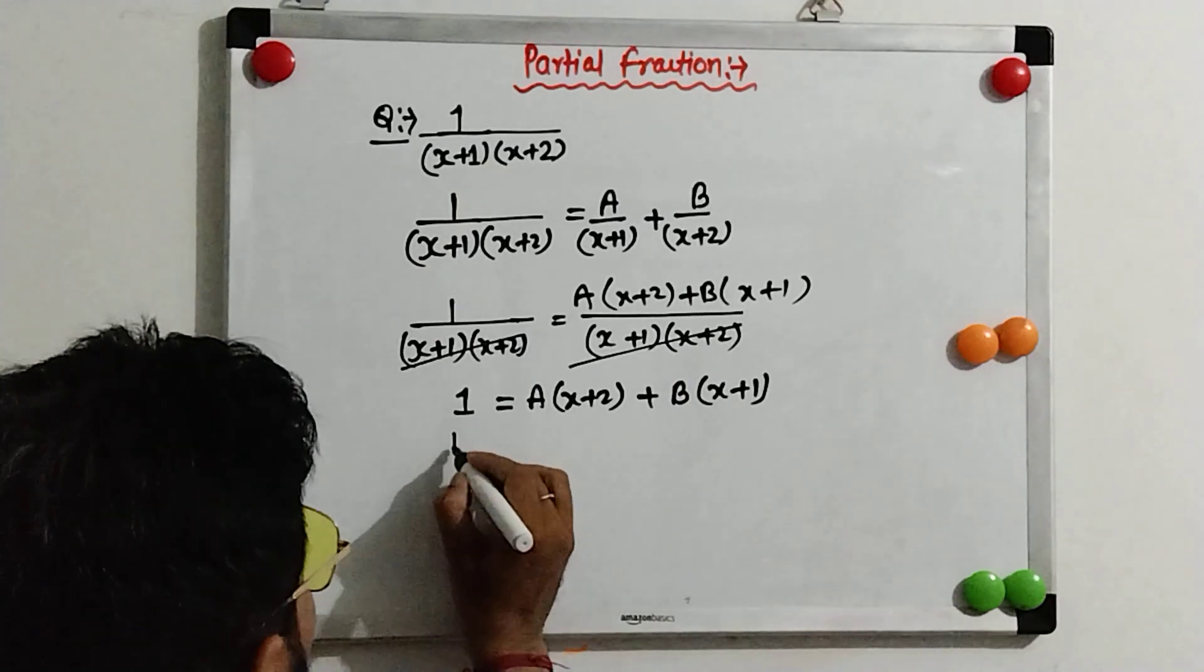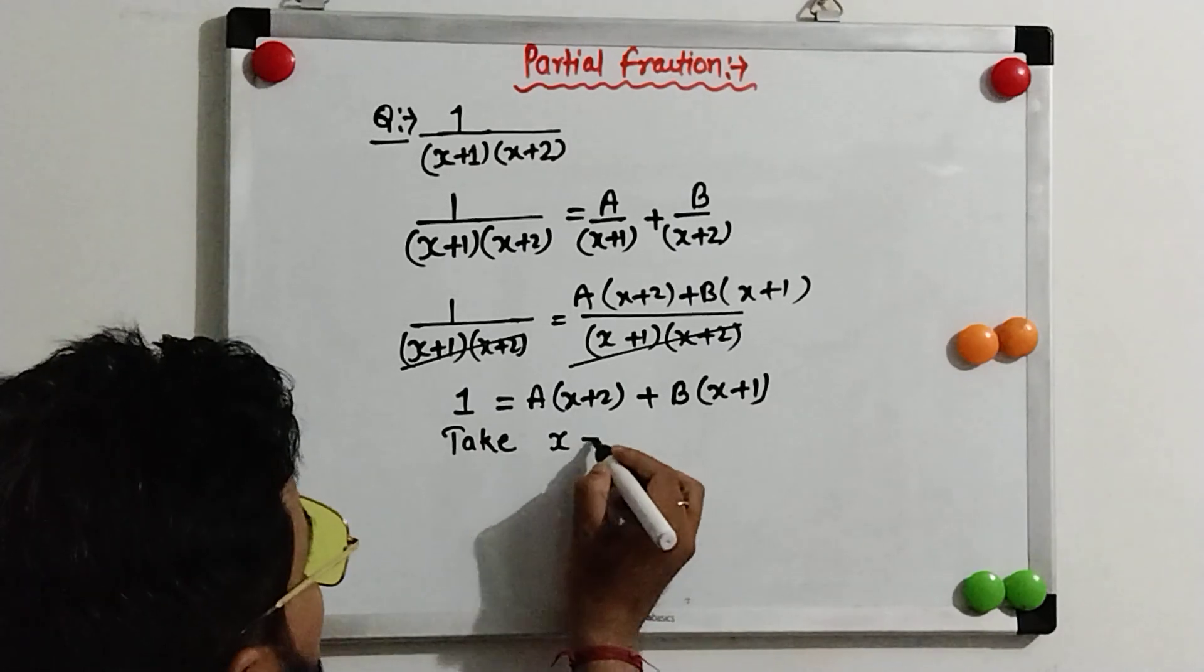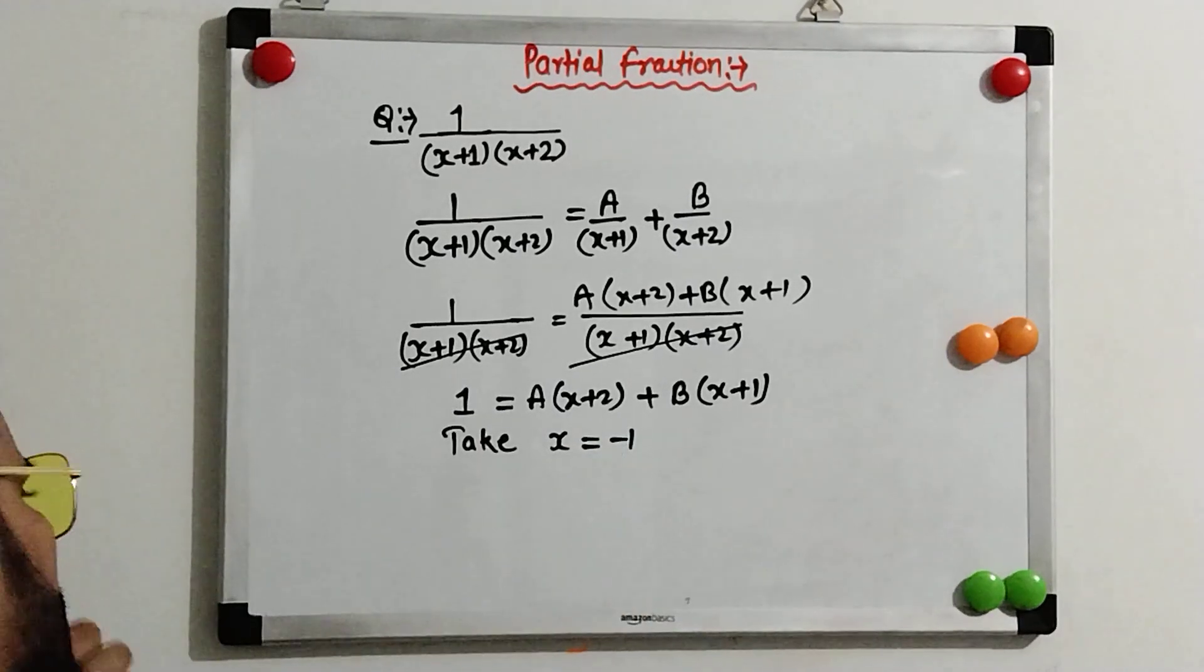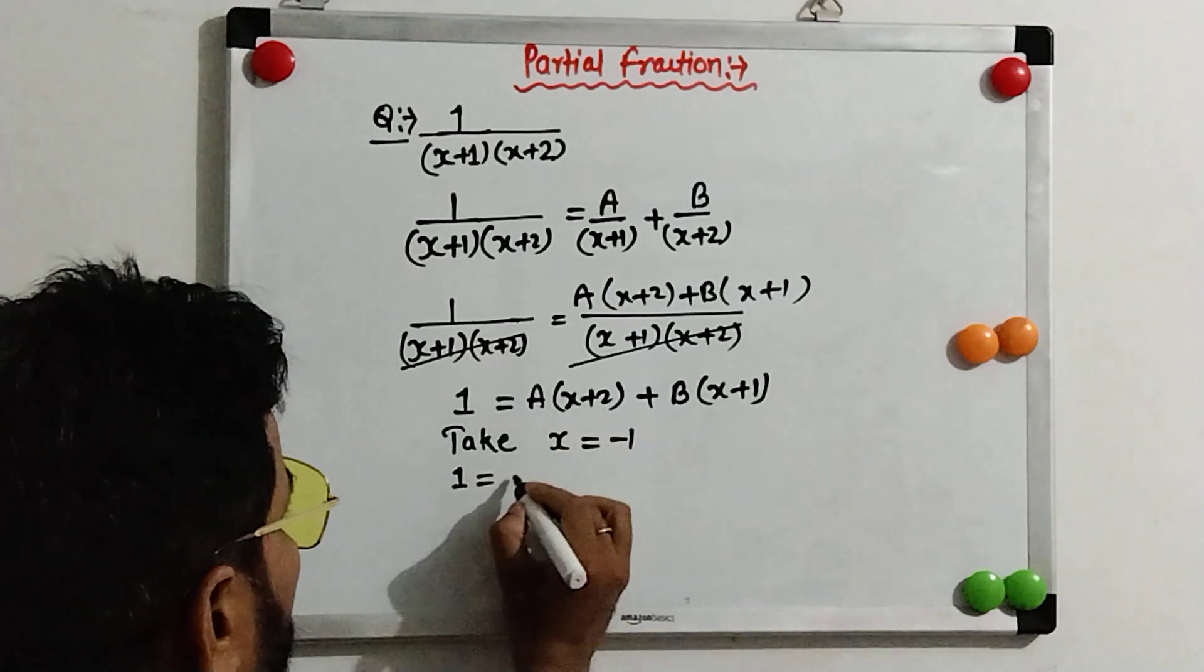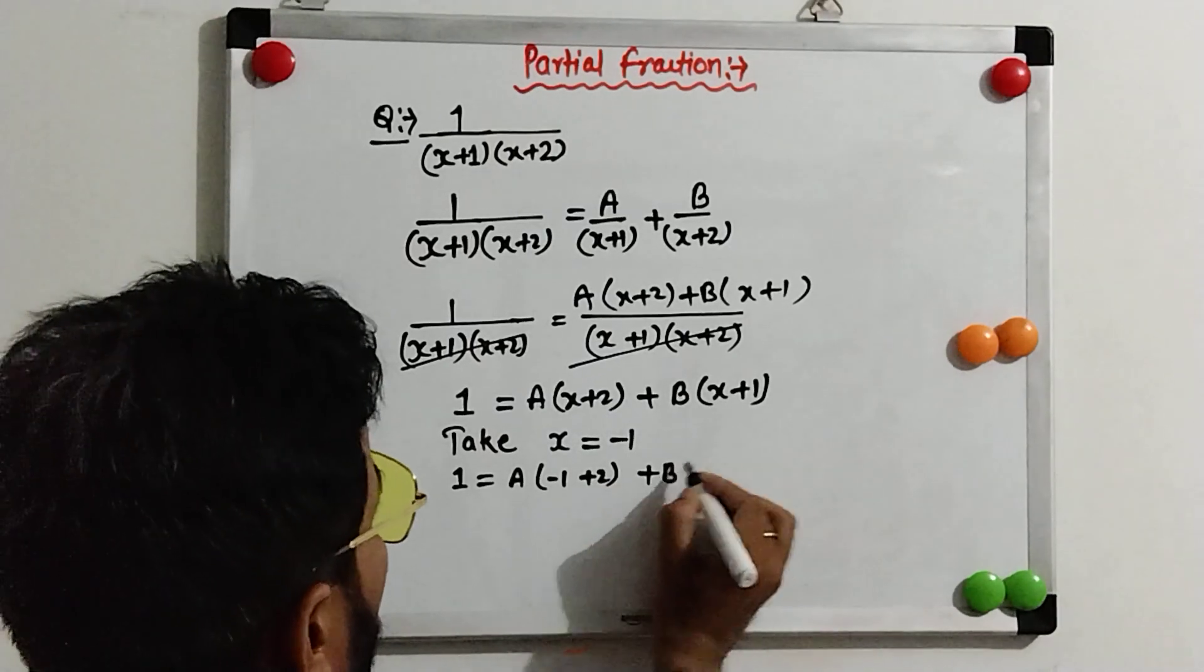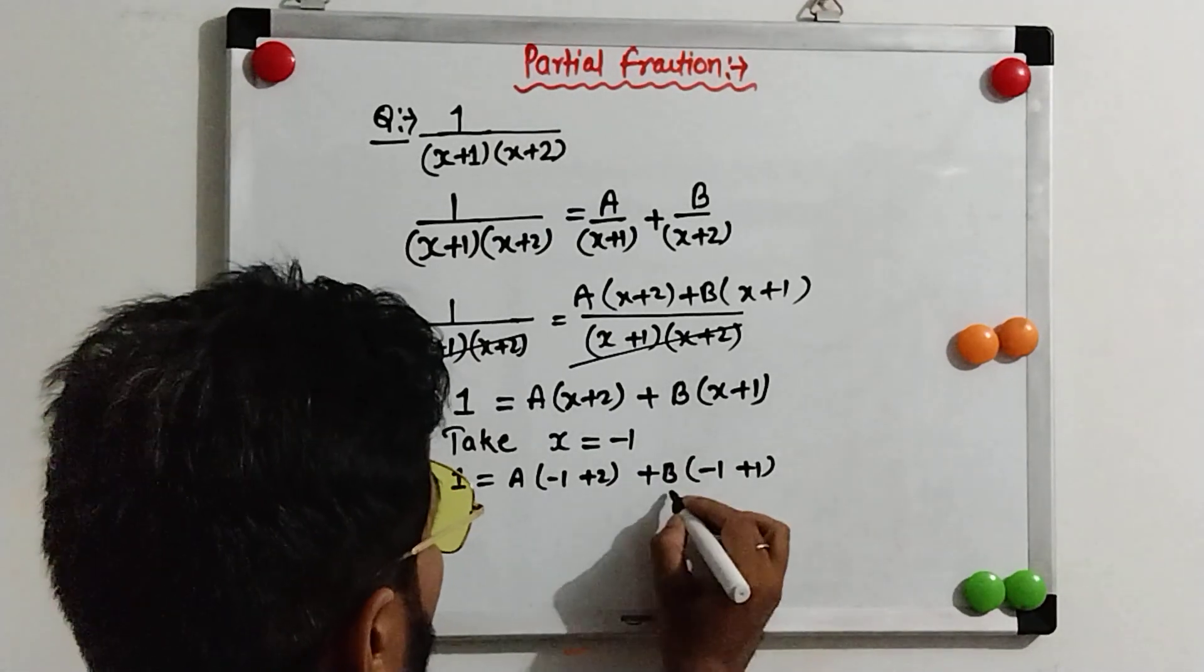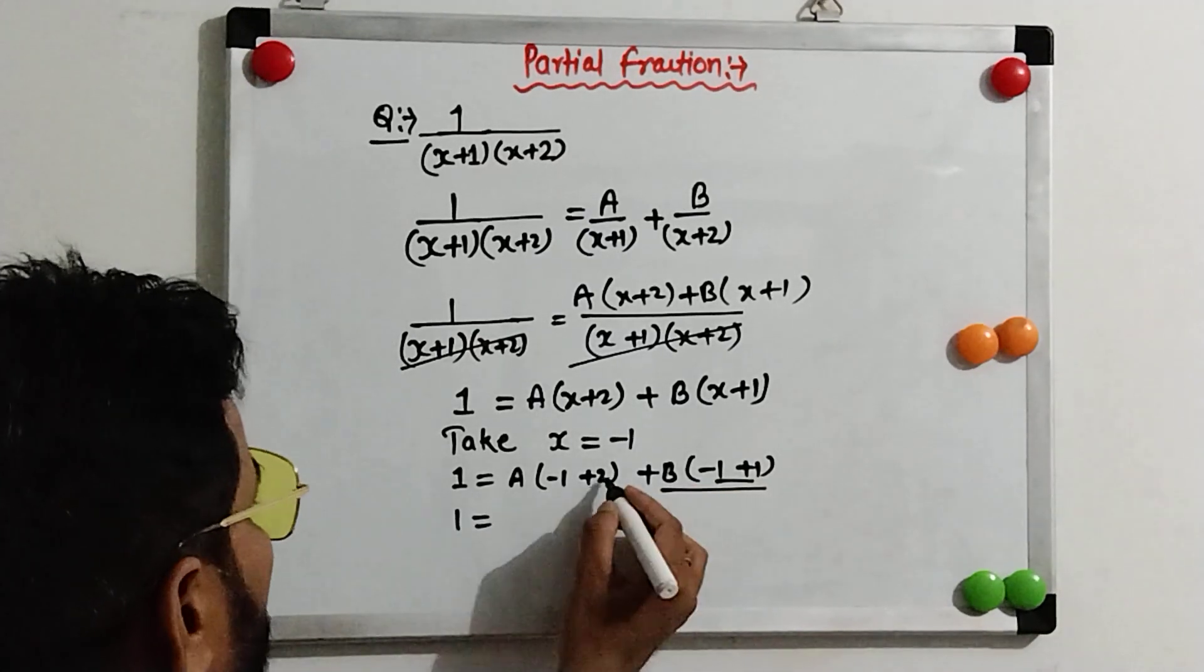For A, take x equals -1. So, here 1 equals A times (-1+2) plus B times (-1+1). This will be 0 because 0 times B is 0. So, 1 equals A.